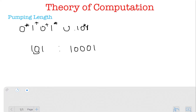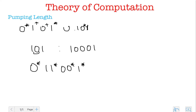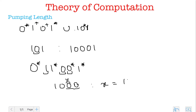Let's look at the first part and convert it: zero-star one one-star zero zero-star one-star. What's a string of length three or more from here? Let's take '1000' — the '1' comes from the mandatory one, and the zeros are generated by zero-star. In this case I take y to be just the middle zero, so x equals '10', y is '0', and z is '0'.